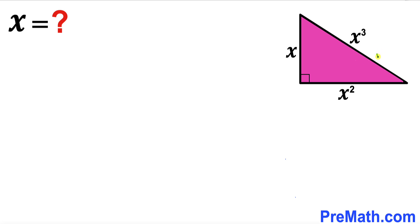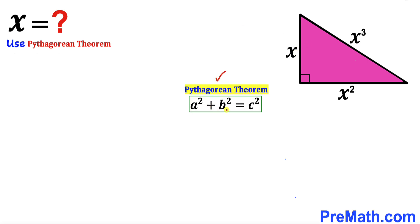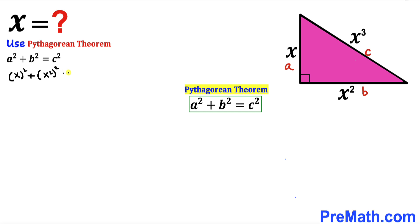Let's focus on this right triangle and apply the Pythagorean theorem: a squared plus b squared equals c squared. Let me label the hypotenuse as side c, this side as lowercase a, and this as lowercase b. Filling in the blanks in the Pythagorean formula, we get x squared plus (x squared) whole squared equals (x cubed) whole squared.